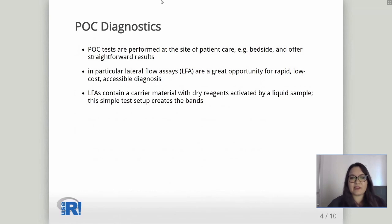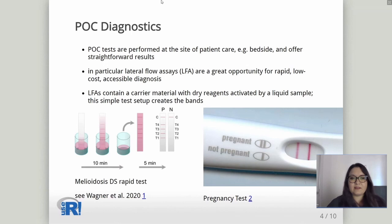LFAs contain a carrier material with dry reagents activated by the liquid sample. This simple test setup creates the bands. Here we have two examples of lateral flow assays — on the left, a test for melioidosis from colleague Gabriel Wagner, and a more known example is the pregnancy test, or in our pandemic times, the COVID quick tests.